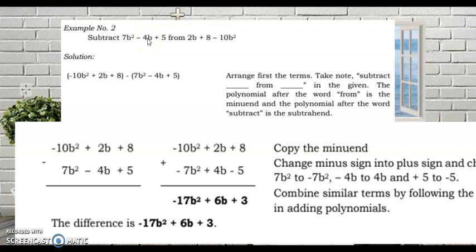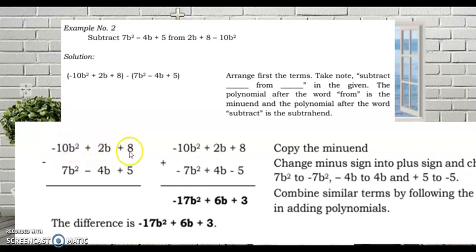Arrange in descending order, then apply CCC. The minuend 2b + 8 − 10b², when rearranged in descending order, becomes −10b² + 2b + 8. Don't be confused — it is still the same minuend, just rearranged.